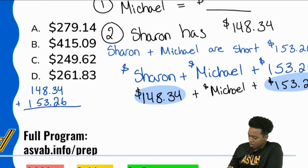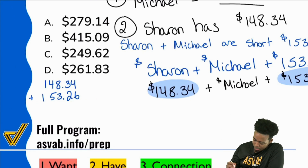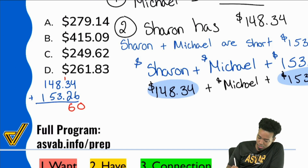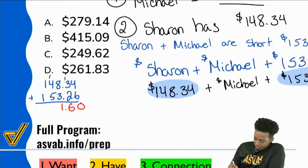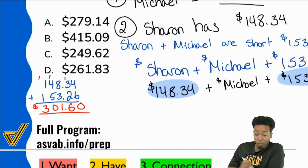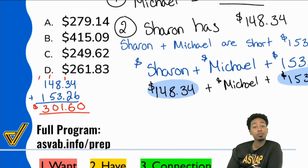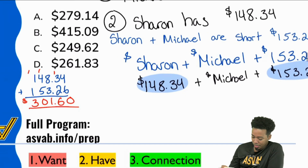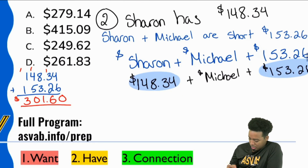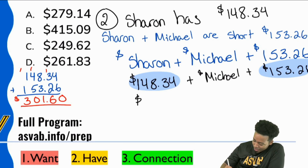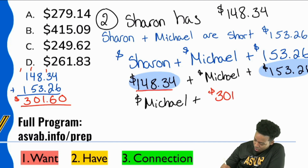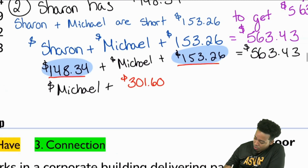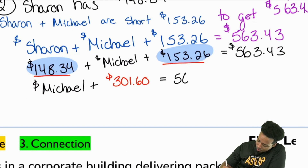Let's add these up. We have 4 plus 6 is 10, carry the 1. 3 plus 1 is 4, plus 2 is 6. 8 plus 3 is 11, carry the 1. That gives us $301.60. So we now have Michael plus $301.60 equals $563.43.